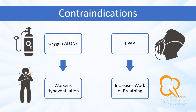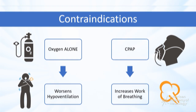Instead, bi-level respiratory assist devices are used. These provide higher pressure during inspiration and lower pressure during expiration, which improves movement of air in and out of the lungs.